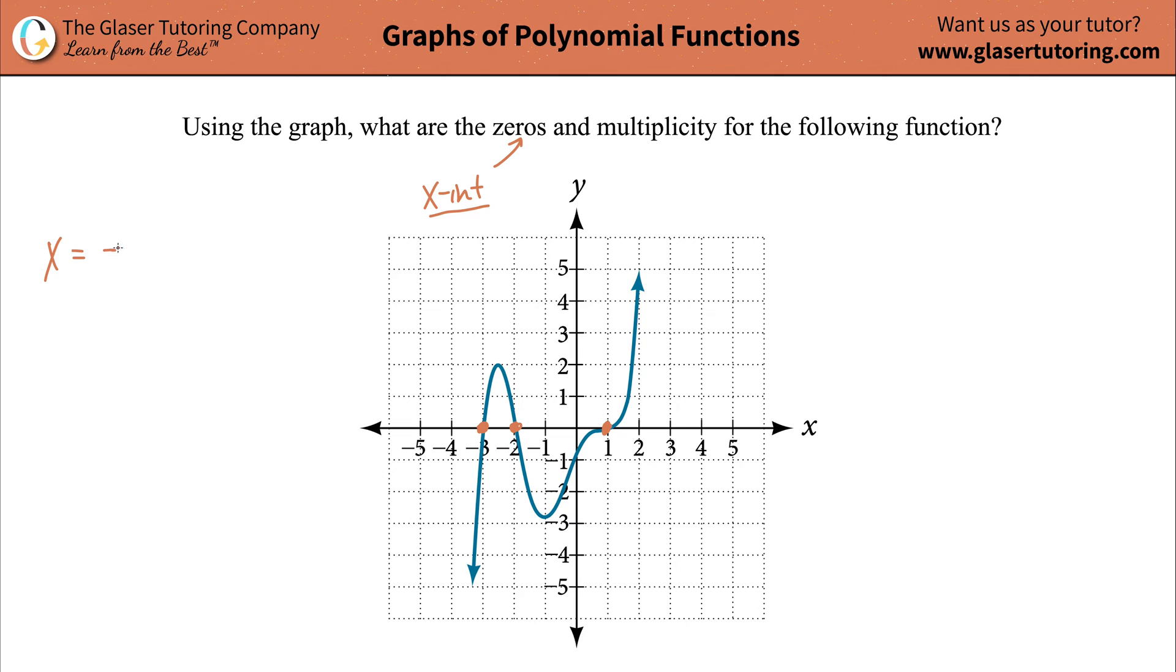All right, so let's write them down. Negative 3, negative 2, and 1. These are the zero values.